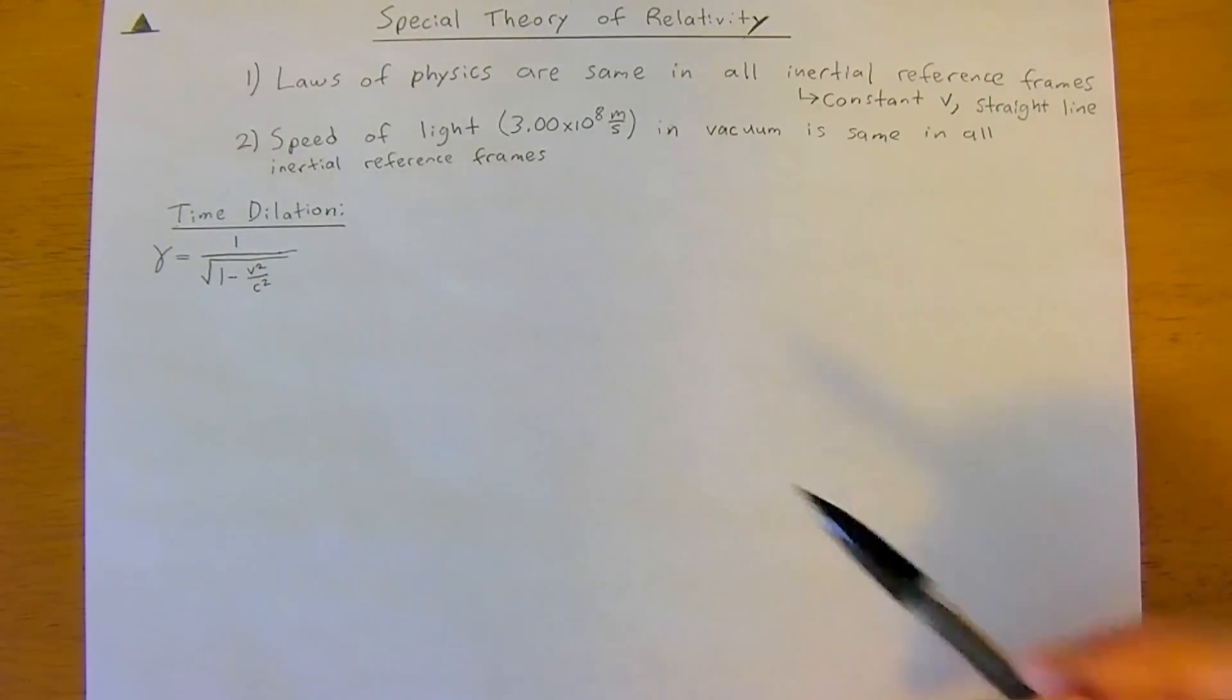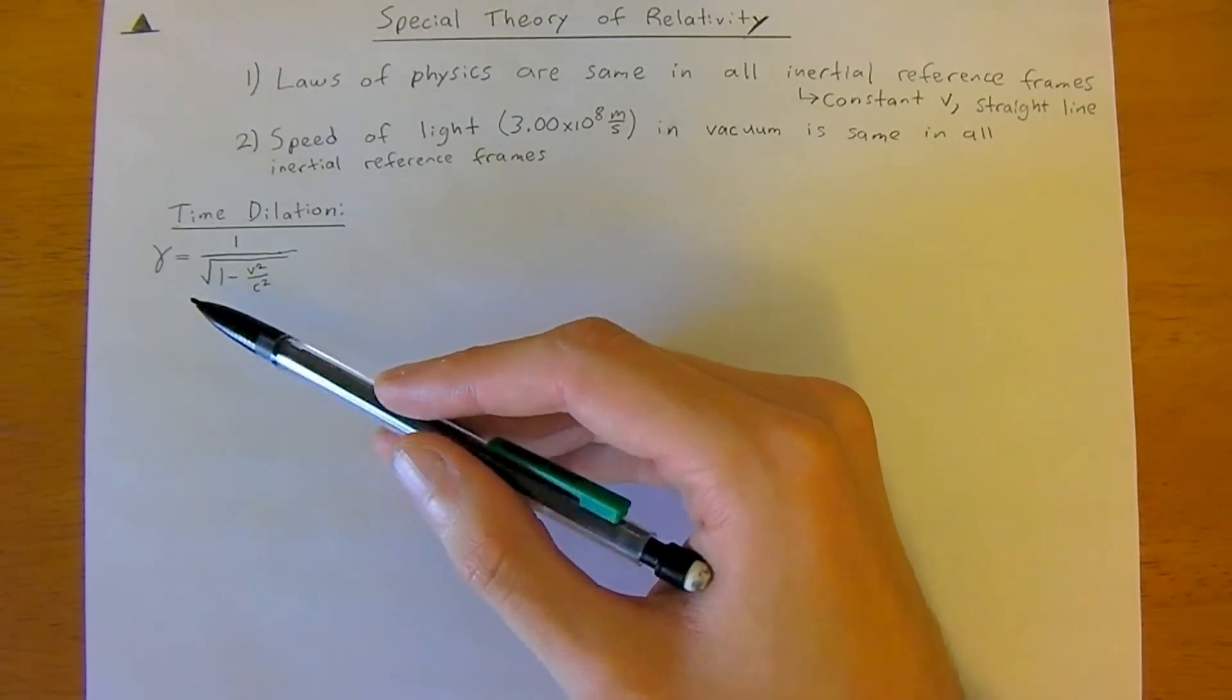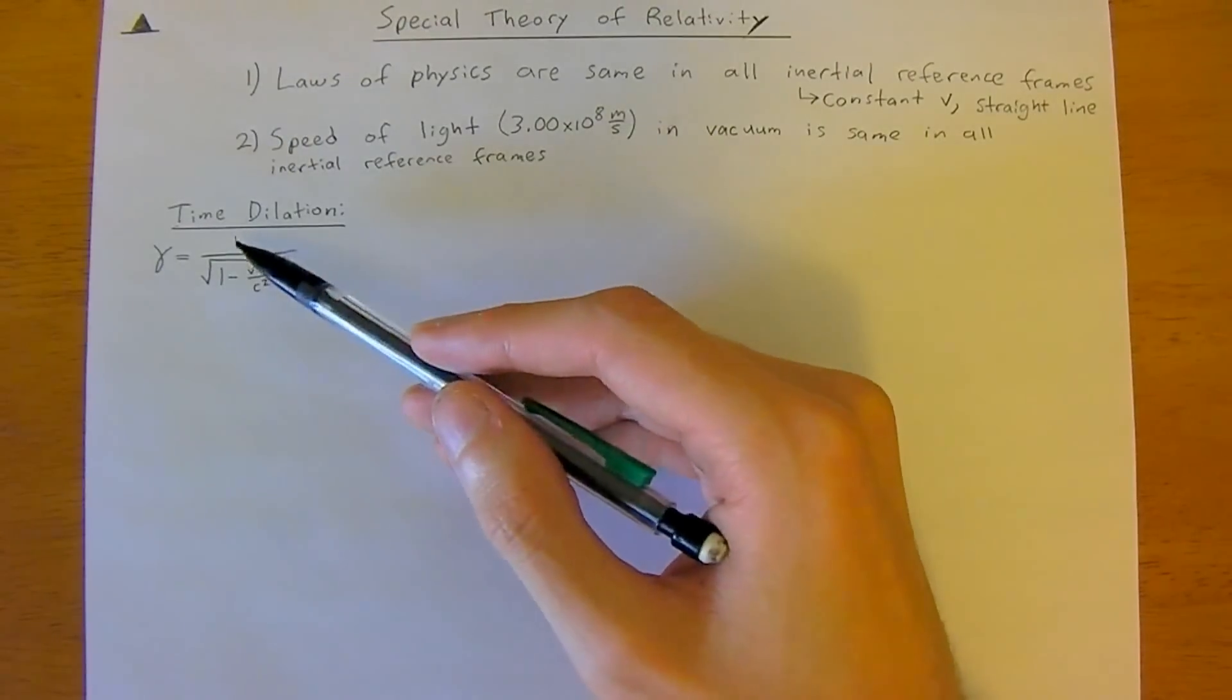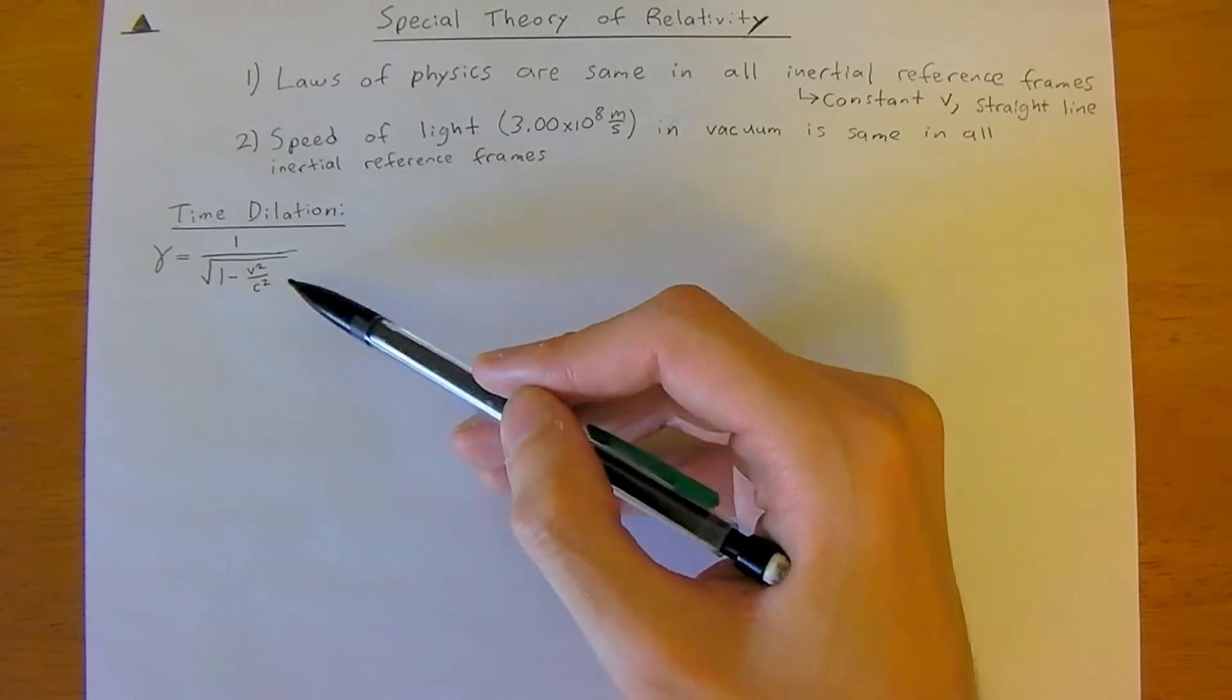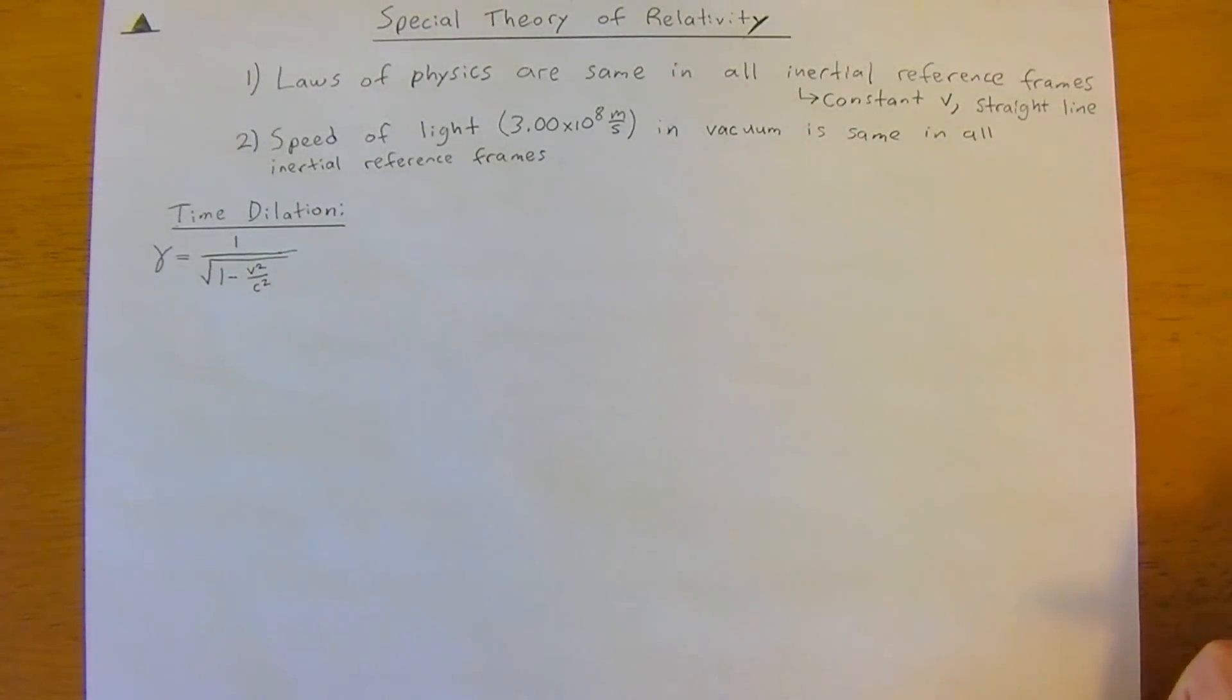And so in time dilation, we use this gamma here. It is a popular symbol to represent 1 divided by the square root of 1 minus velocity squared over the speed of light squared. So I want to run through an easy problem just to get you used to this.